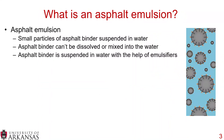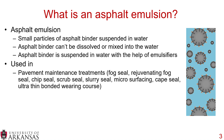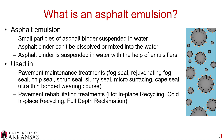Just so everyone's on the same page, an asphalt emulsion is small particles of asphalt binder that are suspended in water. The asphalt binder cannot be dissolved or mixed into the water, but it is suspended with the help of emulsifiers. Asphalt emulsions are used in various pavement maintenance treatments — everything from fog seals and rejuvenating fog seals, to chip seals, microsurfacing, cape seals, and ultra-thin bonded-wearing courses.